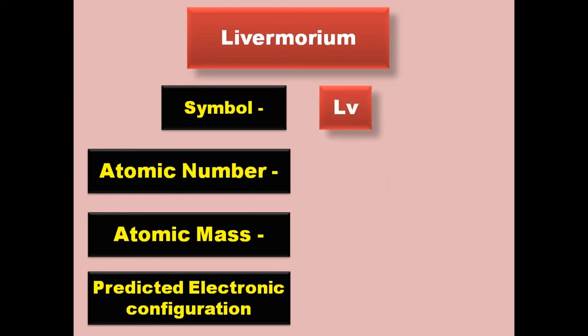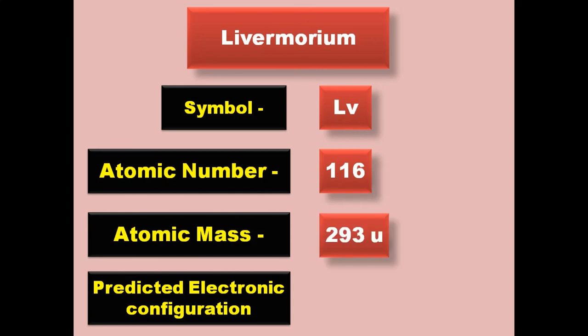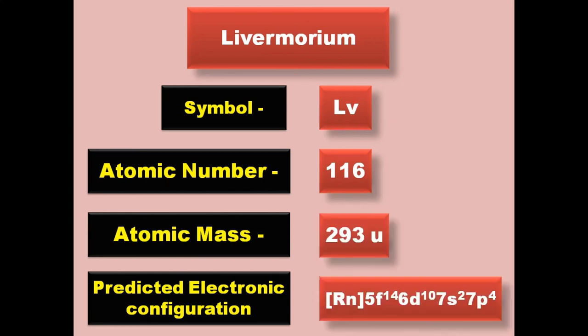Livermorium has symbol Lv, atomic number 116, atomic mass 293, predicted electronic configuration [Rn] 5f14 6d10 7s2 7p4. Livermorium is a post-transition metal and is expected to be solid at room temperature.